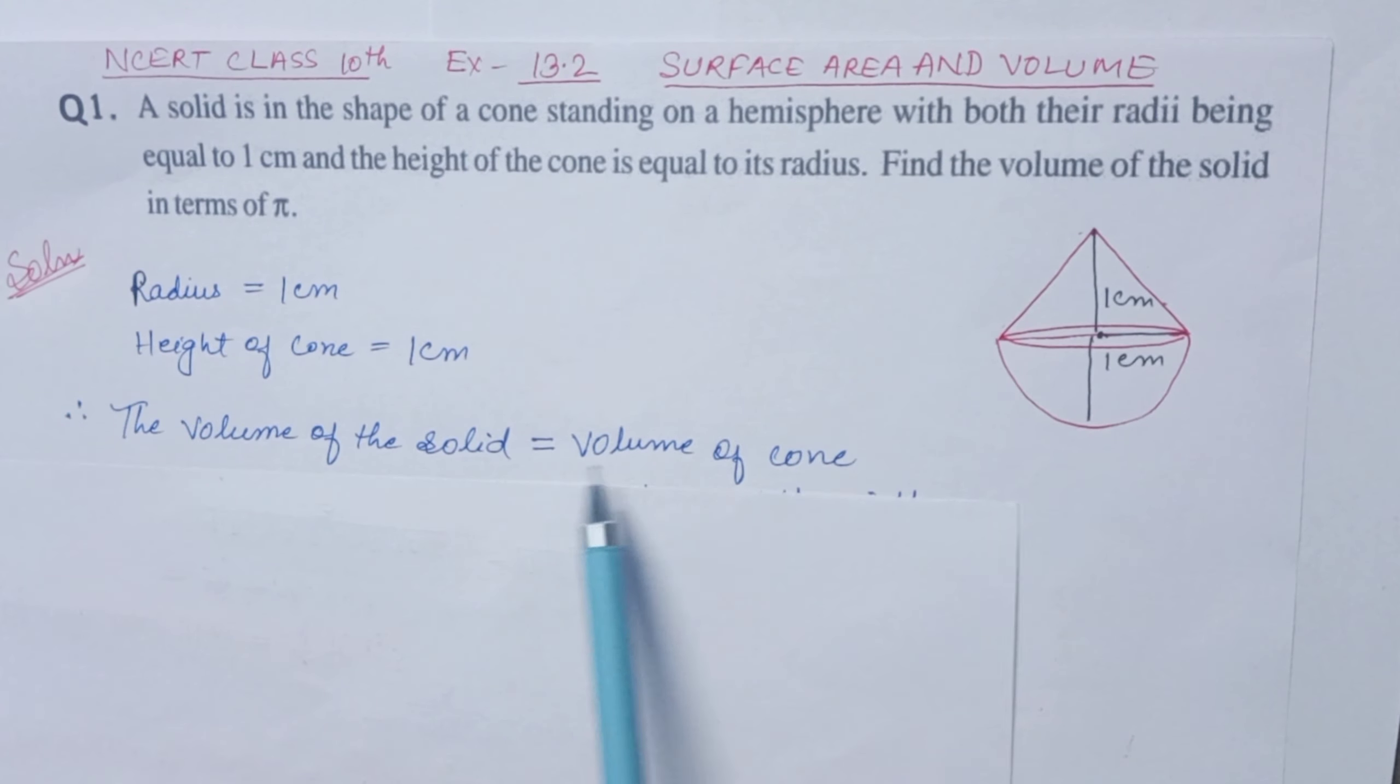The volume of the solid equals the volume of cone plus the volume of the hemisphere.